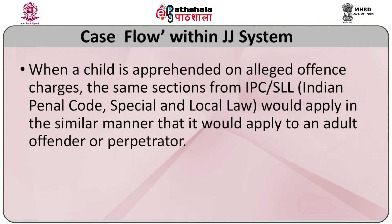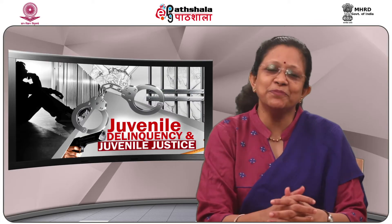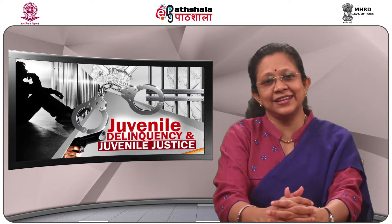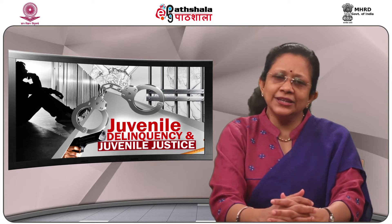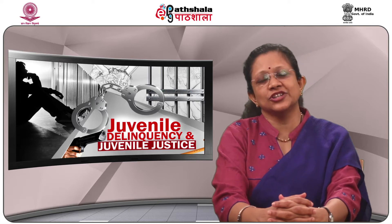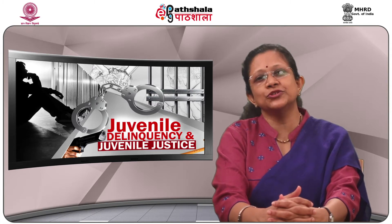Let us do an overview of the case flow within the juvenile justice system. What happens when a child in conflict with law gets apprehended by the police? This case flow pertains to all children who have not completed 18 years of age. There would be separate procedures for children between 16 and 18 years of age transferred to the children's court. All young persons under alleged offence charges get apprehended by the police — if they are less than 18 years of age they come under the juvenile justice system, whereas those above 18 go into the criminal justice system.